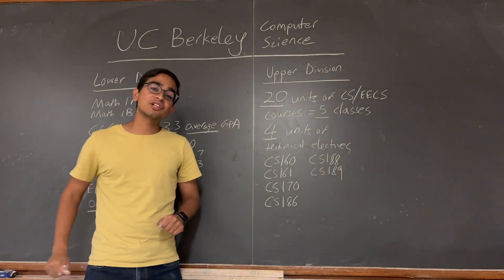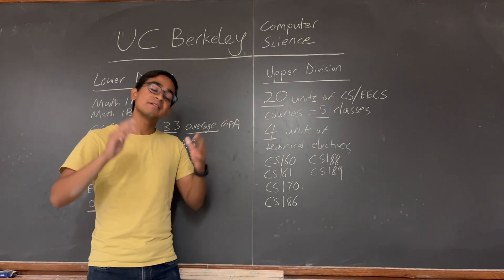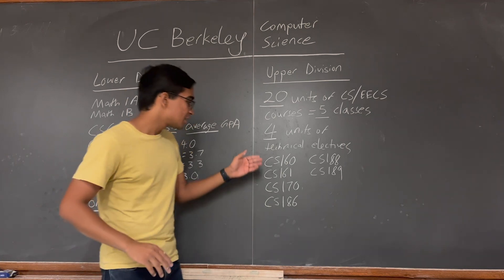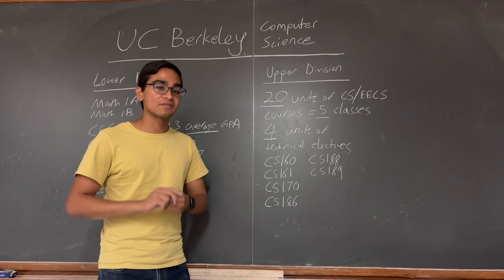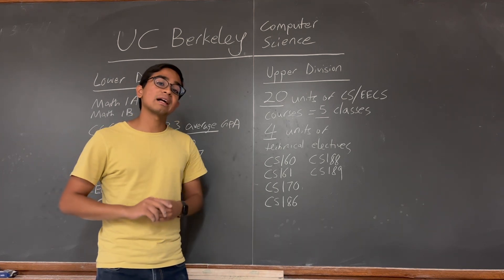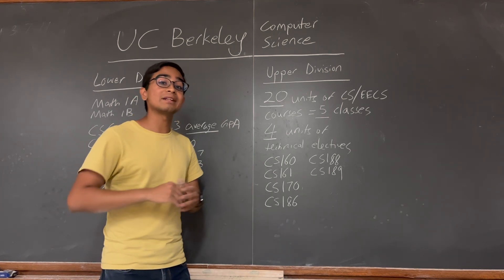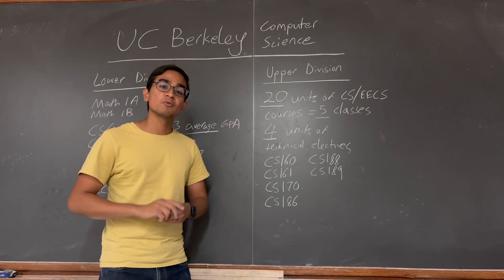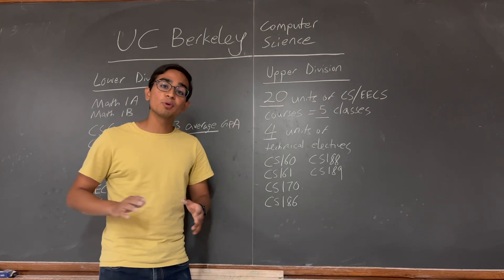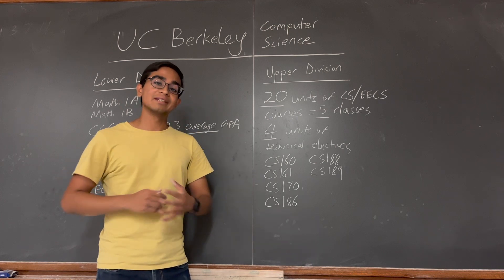Here are some recommendations for upper division CS classes that I think you should consider. The first one is CS 160, which is User Interface Design and Development. This is a very important class for students that want to get into front-end work in the future. The next one is CS 161, which is Computer Security. Very important for students who want to get into security in the future.